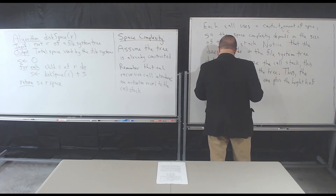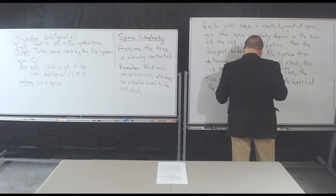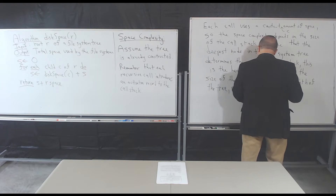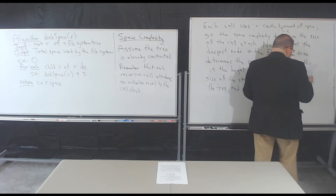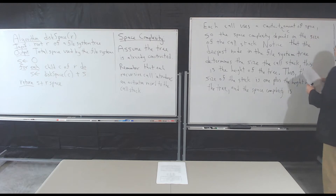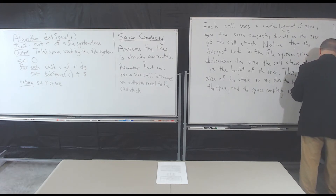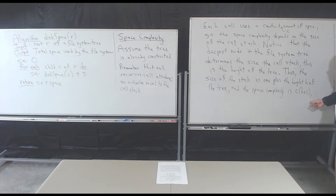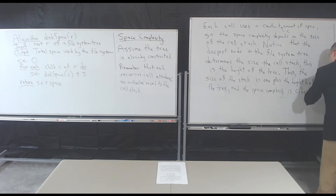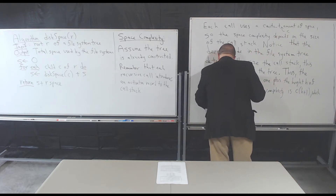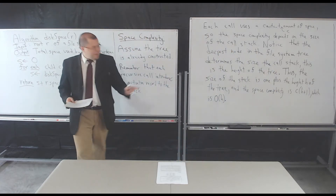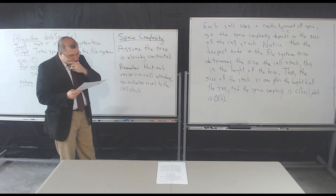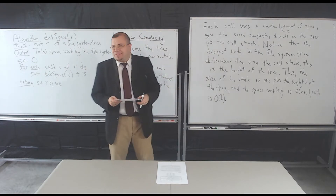The space complexity is: for each call, there's some constant C amount of space, so it's C times (h + 1), which is O(h). You can see quite clearly that it relates to h — it's big O of h.